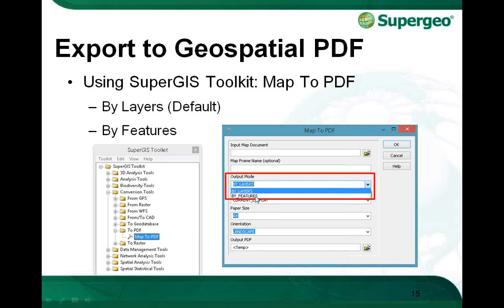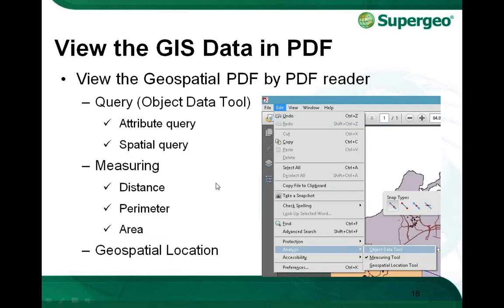By Features mode means that you can do a query by each of the individual features. So if you want more details, use the By Features option. After you export the GIS data into PDF format, you can view the geospatial PDF using a PDF reader. One tool you can use is the Object Data tool to do an attribute query — you can use a keyword to find features, and also do a spatial query by clicking on the map to select features.